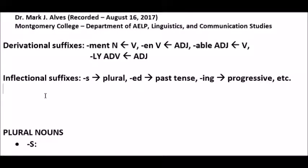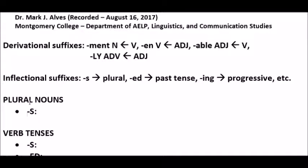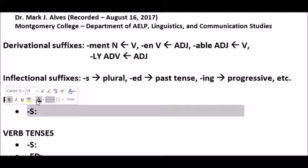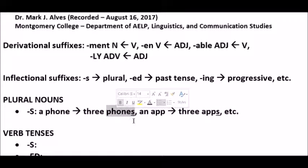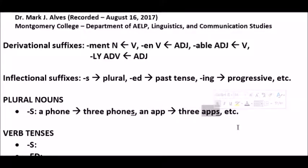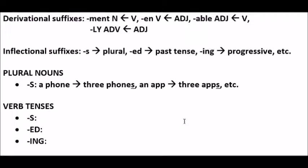First, we can make most nouns plural by adding the inflectional -s on them. A phone singular, three phones plural. An app singular — you add the -s and the noun becomes plural. Again, the noun doesn't change, just the feature and meaning of it — the grammatical feature of plurality.